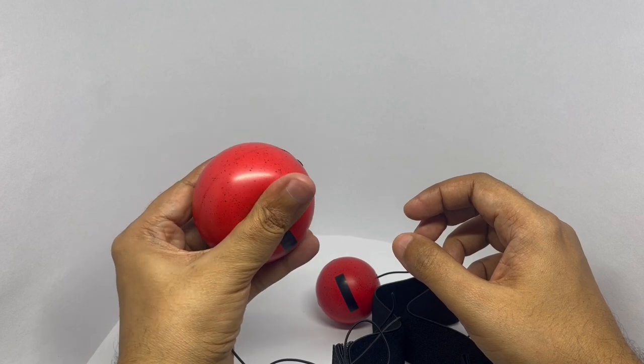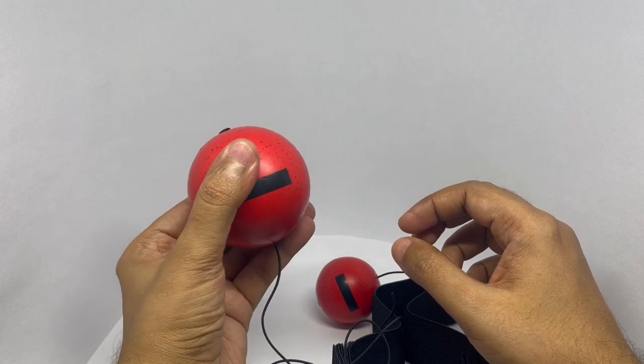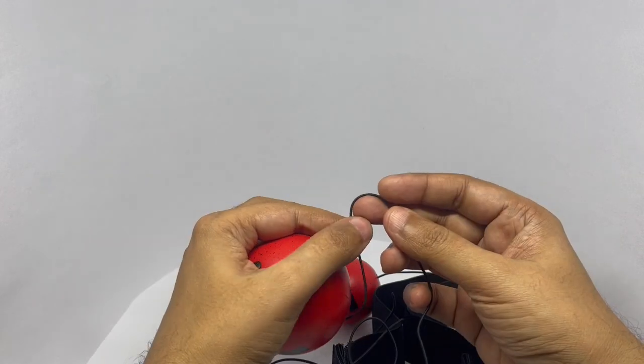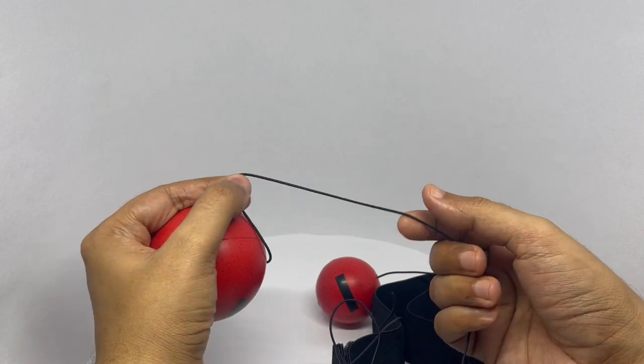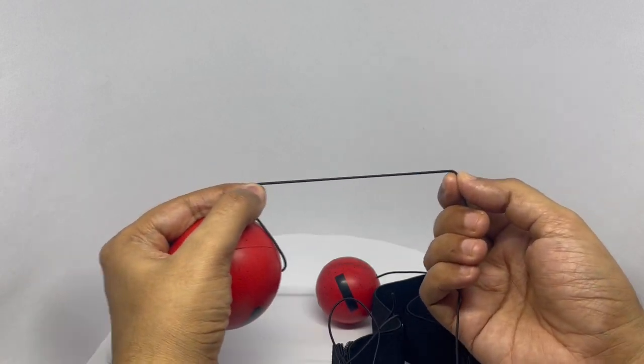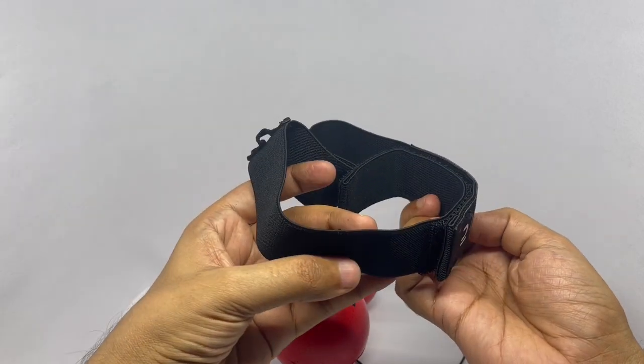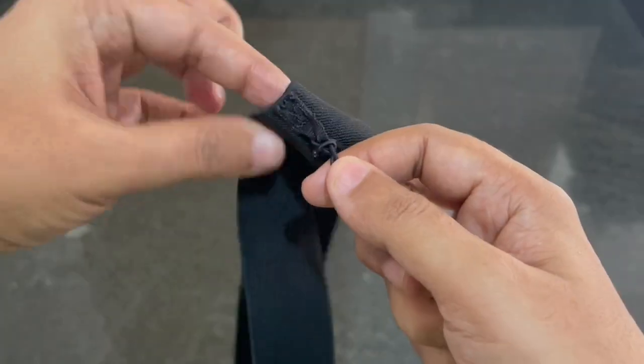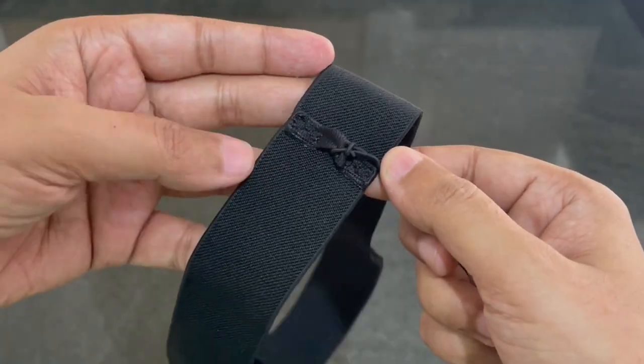The balls are squishy hard balls, and the thread has this elasticity. That's how the band looks. That's where you tie it.